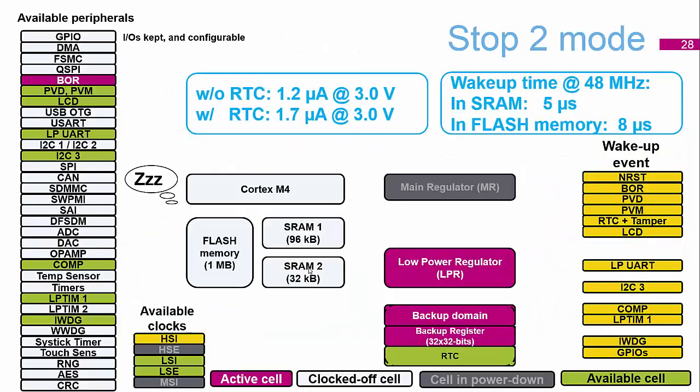Stop Mode 2 has lower current consumption. As you can see on the right-hand side, fewer peripherals are available to wake the device, and on the left fewer peripherals are available to run in Stop Mode 2. This means we can get down to about 1.7 microamps with the RTC running and about 1.2 microamps without the RTC.